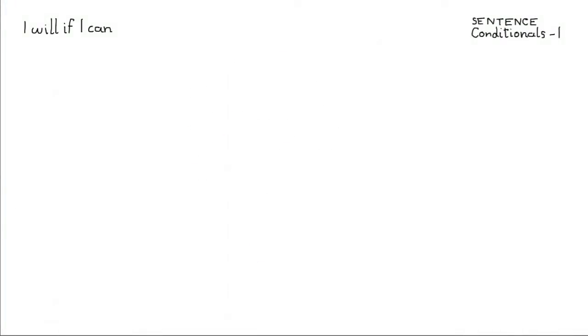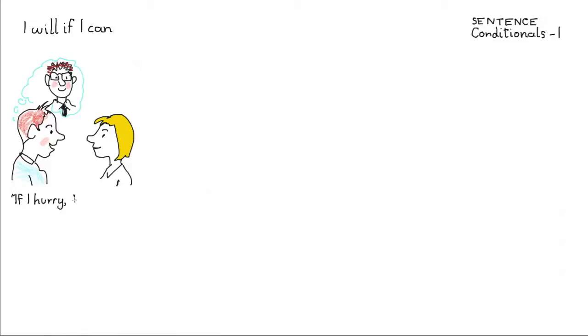We're looking at I will if I can, sentences which are often called Type 1 conditionals, and we'll start off with a drawing that Caroline did for me of a young man talking to a young woman and he's saying, I'll just write it here, if I hurry, present tense, I'll see my brother, future, I'll see my brother before he leaves, or I'll see my brother before he leaves if I hurry, same thing.